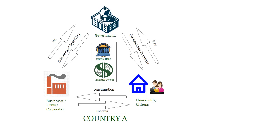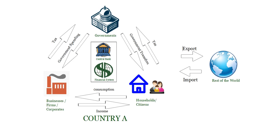Now we have established the economic system of any particular country. Let us introduce the last element: our business relationship with the rest of the world. As a large country like India, we obviously engage in international trading, whereby we export and import goods and services to other countries. This is the entire economic system, and whatever concepts we discuss in macroeconomics will be a part of this system.